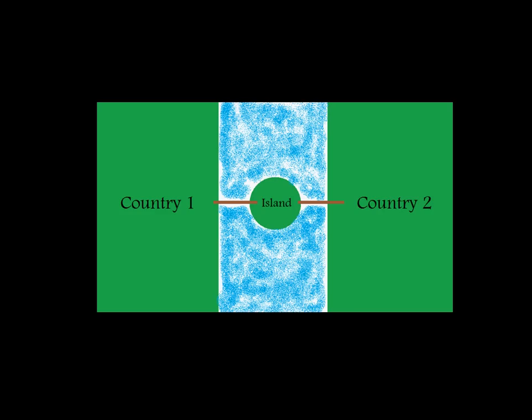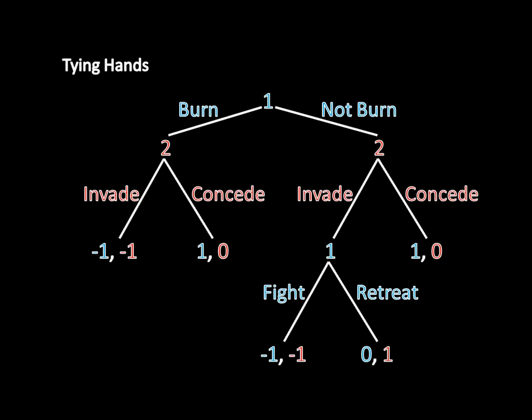So we're going to start out this game by having Country 1 cross over the bridge into the island and decide whether to burn the bridge behind it or not burn the bridge behind it. So this is Country 1 here making that action. If Country 1 were to not burn the bridge, then Country 2 can either invade or concede. If Country 2 invades, then Country 1 can either fight or retreat back over its bridge because it didn't burn the bridge at the beginning.